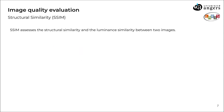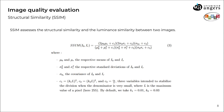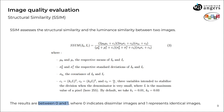SSIM, on the other hand, assesses not only the structural similarity, but also the luminance similarity between two images. By considering human visual perception, it gives a more comprehensive measure of similarity. SSIM is calculated using this formula, and it gives results between 0 and 1, where 0 indicates dissimilar images and 1 represents identical images.